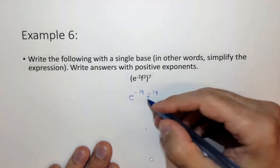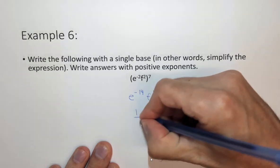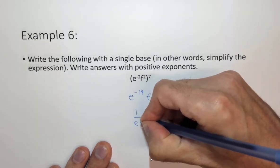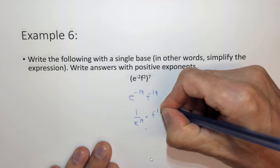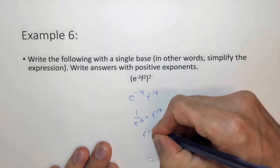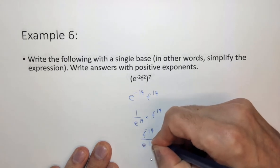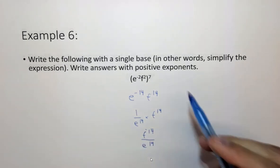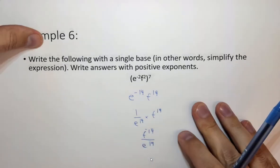Now since this is minus 14 this is the same as 1 over e to the 14 times f to the 14. Multiplying f by 1 we simplify this to f to the 14 over e to the 14. So this is how we can deal with the exponents in this case.